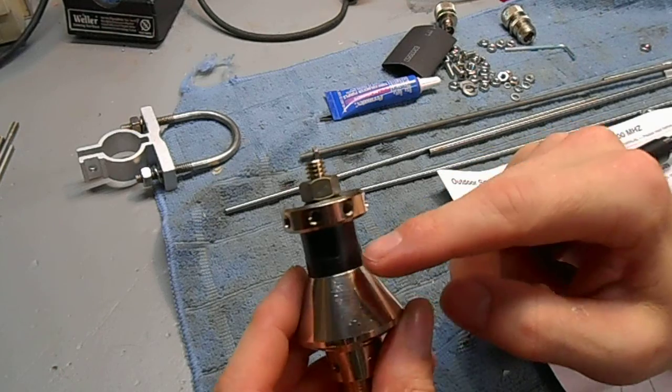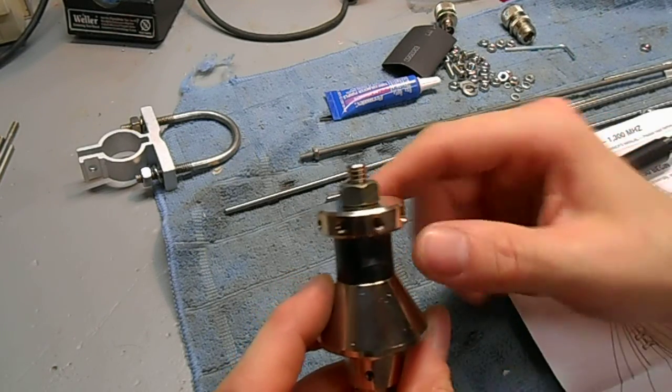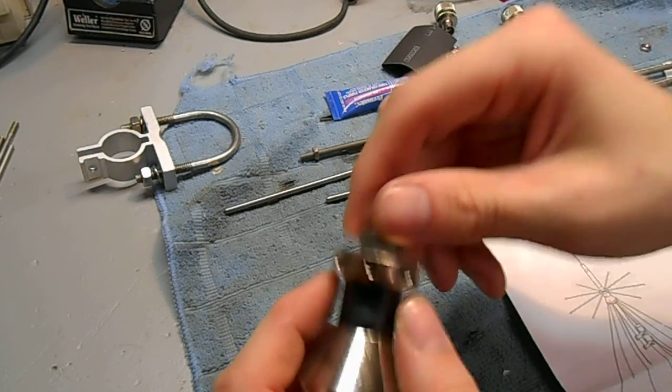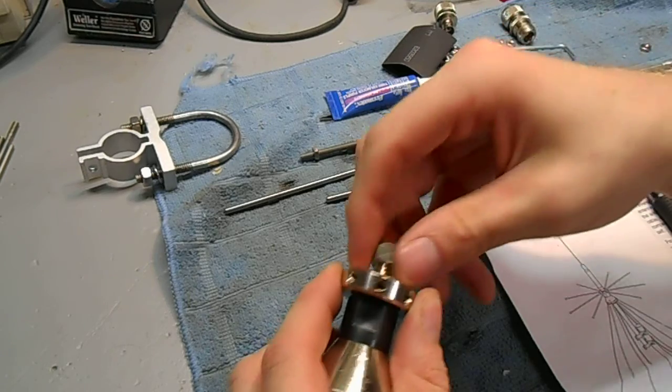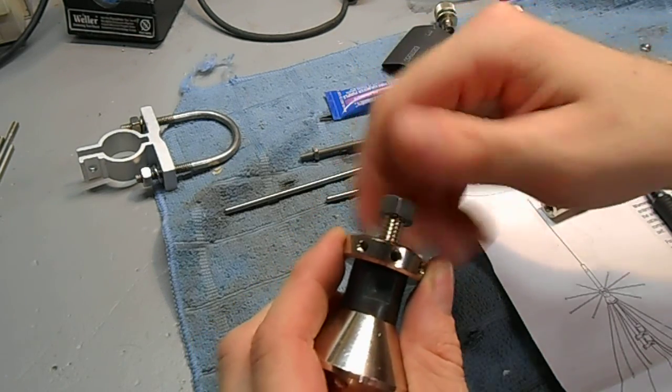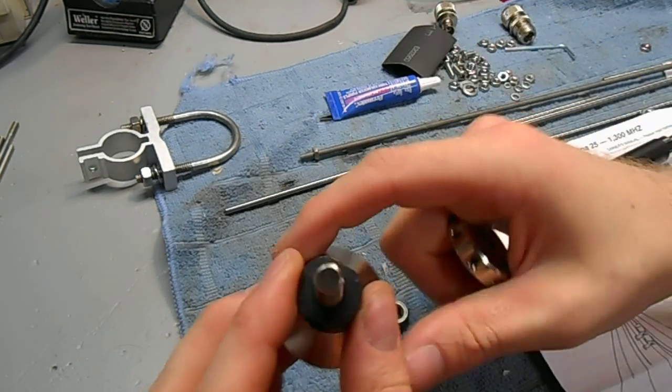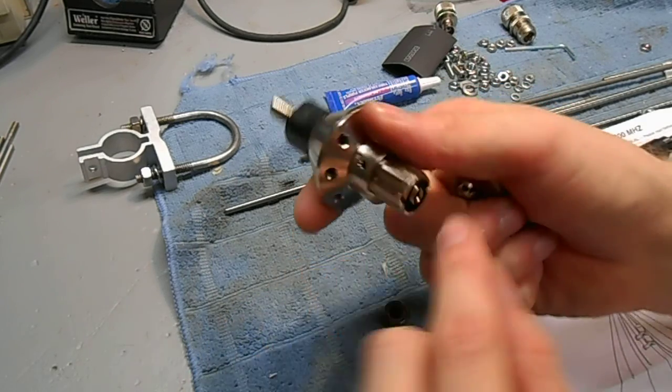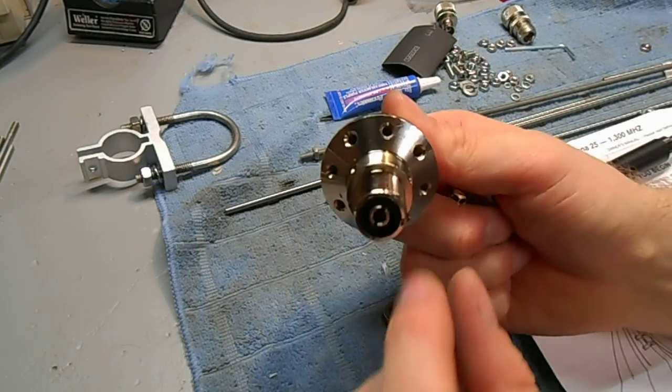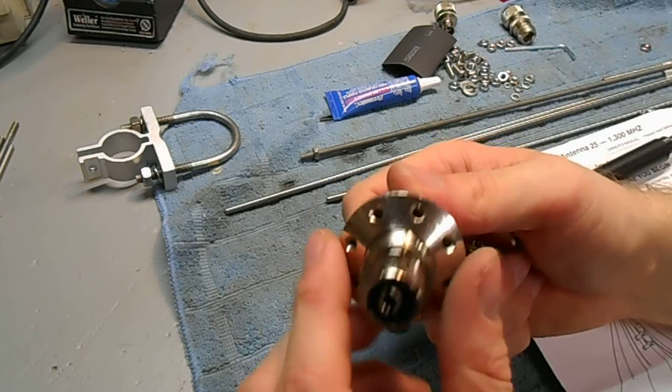I do add a little bit of RTV sealant to this plastic insulator. It just unscrews and you can just add a little bit of sealant to it. And also to the top here, otherwise water can seep down the threads into your center conductor. It uses a SO239.